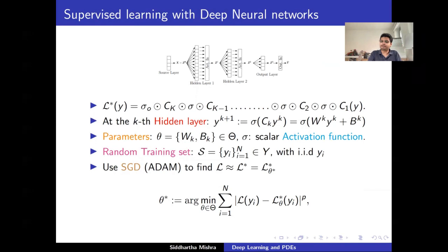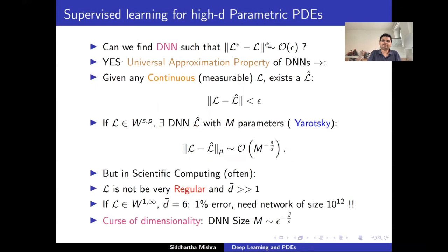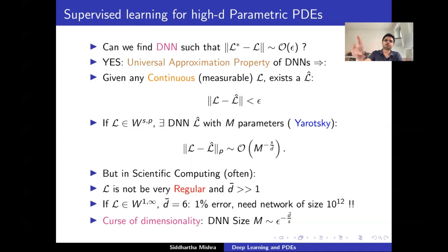Can this actually be done? Remember, the target is to learn a function from point values — it's an interpolation problem. We want a deep neural network that, for a given error tolerance, is close to the target function. In principle, yes, because deep neural networks have the universal approximation property: as long as the underlying map is continuous — or even just measurable — for any small epsilon you can find a neural network that approximates it to the desired precision. This is a very powerful property of this class of functions.